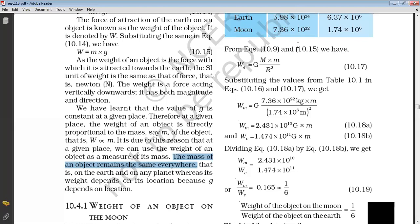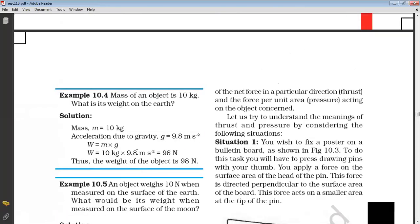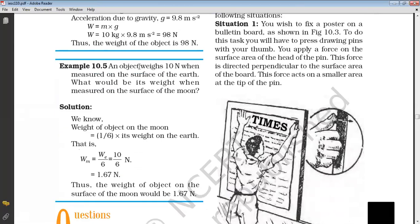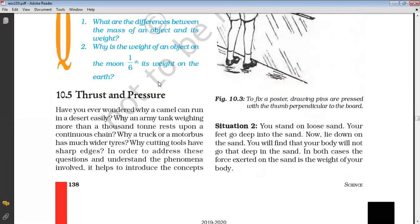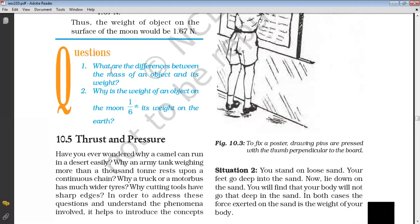For weight, we know only one relationship between earth and moon — it is one-sixth. This is a tricky objective question. An object weighs 10 Newton when measured on the surface of the earth. What will be the weight when measured on the surface of the moon? On the surface of the moon it will be 10 divided by 6, that is 1.67 Newton. This is an important question.